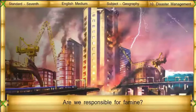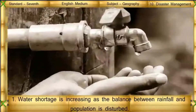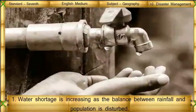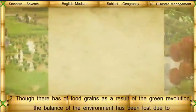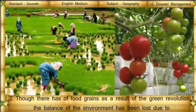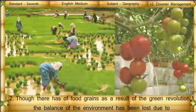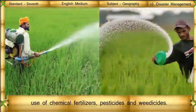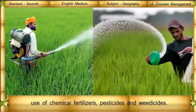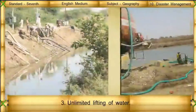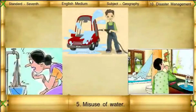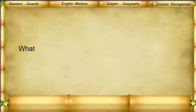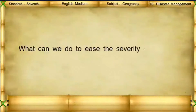Are we responsible for famine? Water shortage is increasing as the balance between rainfall and population is disturbed. Though there has been increased production of food grains as a result of the green revolution, the balance of the environment has been lost due to use of chemical fertilizers, pesticides, and herbicides. Unlimited lifting of water, erosion of land, and misuse of water are also contributing factors.